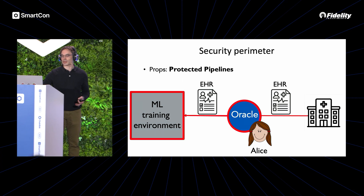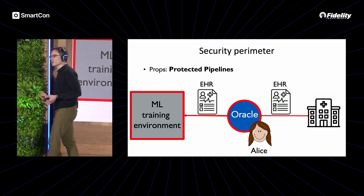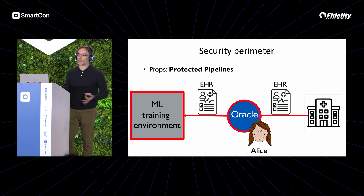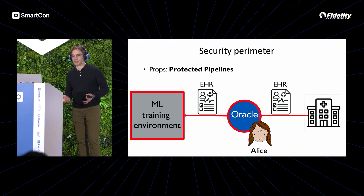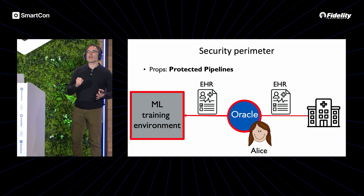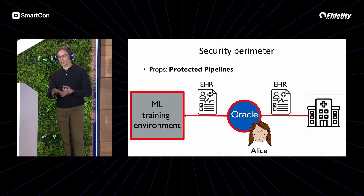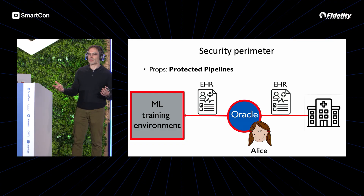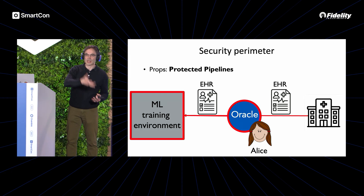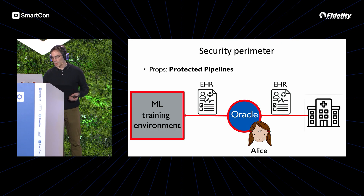Alice gets other privacy protections as well, and there are additional integrity properties I don't have time to get into. This idea we refer to as props, or protected pipelines. Using the confidential oracle system combined with other privacy-preserving systems like trusted execution environments for model training, we end up with a full end-to-end security perimeter so that the integrity and privacy of the data being ingested are protected from the time they're sourced through the time they're used, and beyond.